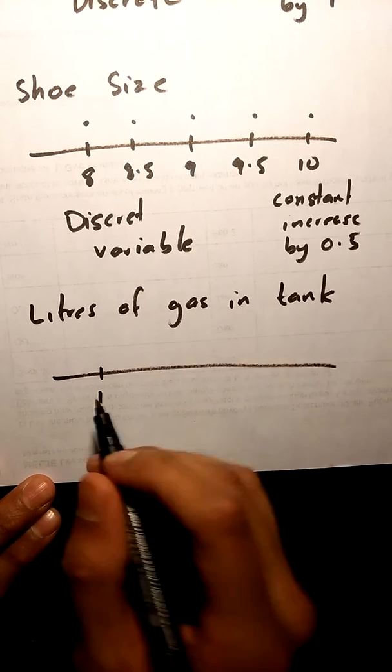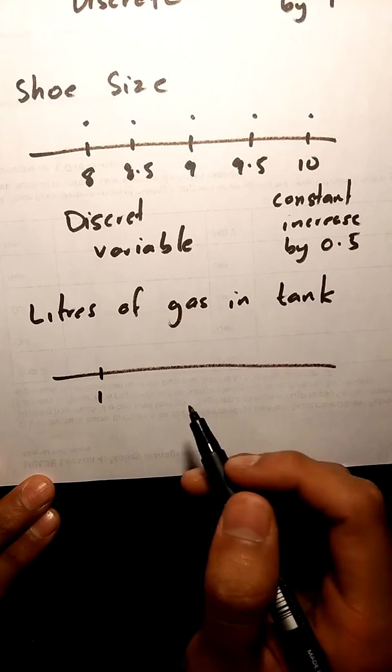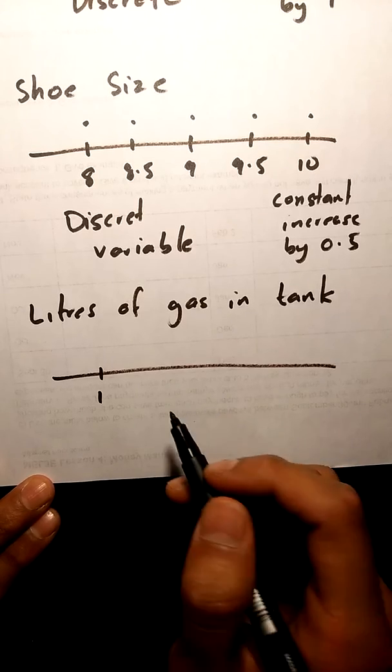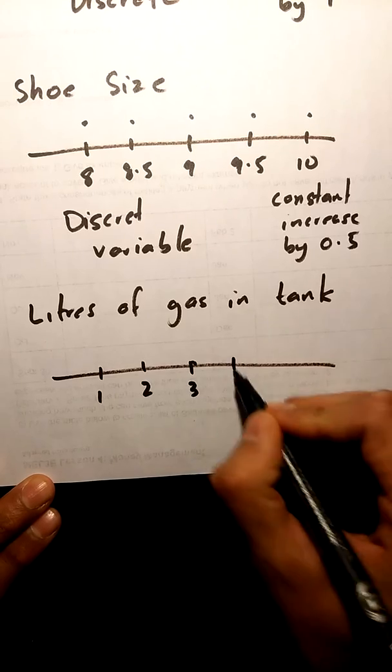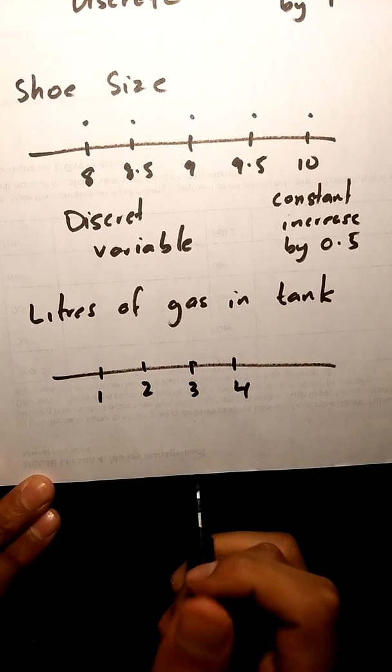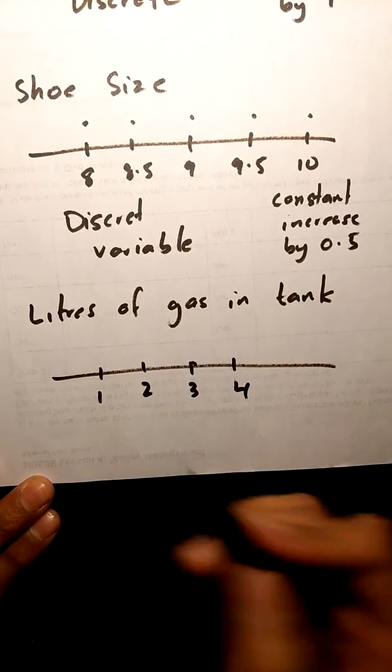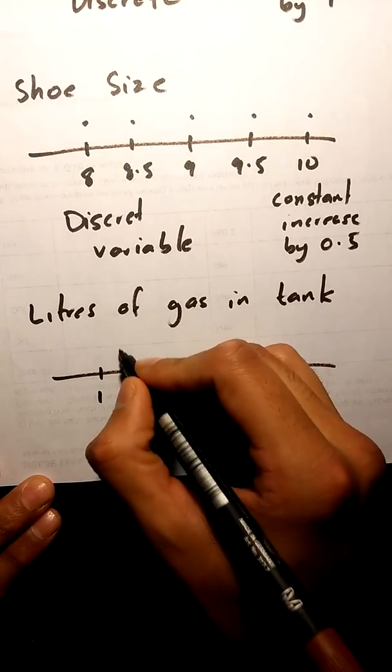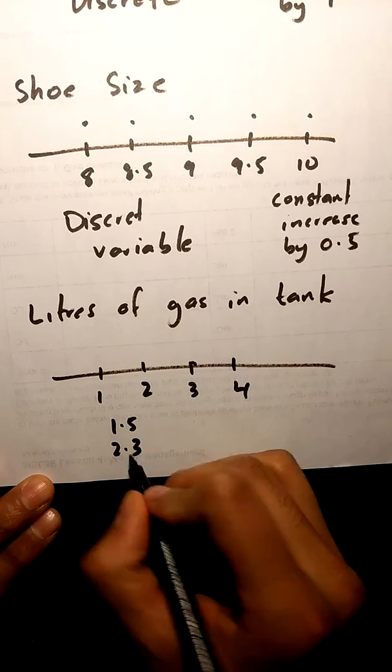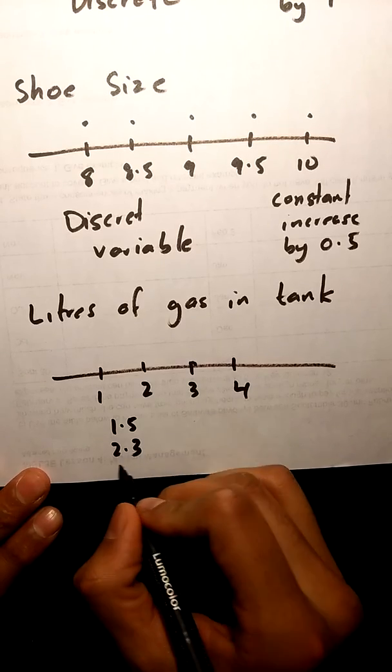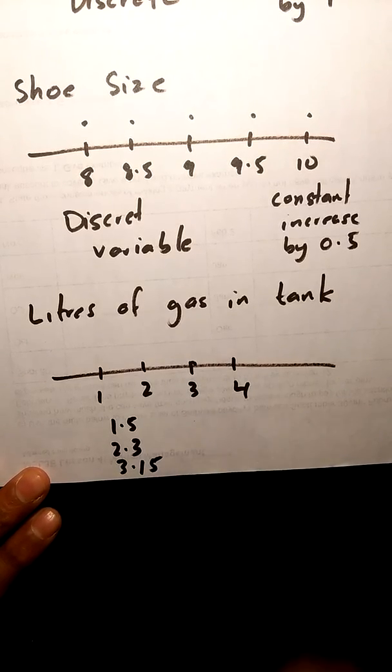You can honestly pick a couple of numbers bigger than one. So I'm just going to pick 2, 3, 4. And can your tank have 1.5 liters? Yep, that's possible. Can I have 2.3 liters? That's possible. Can I have 3.15? Yep, that's possible too.